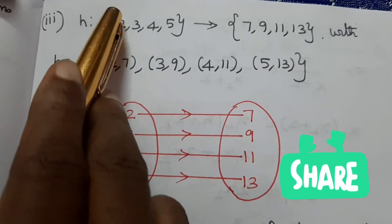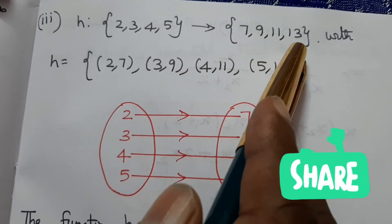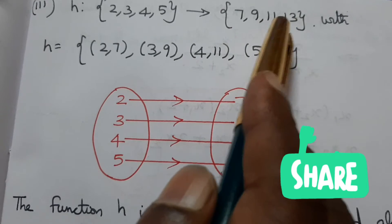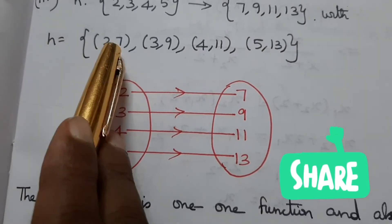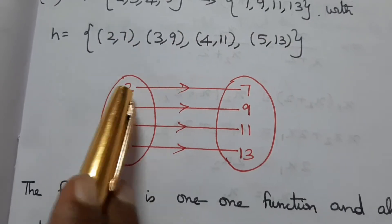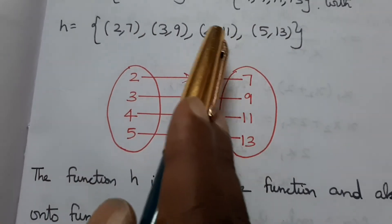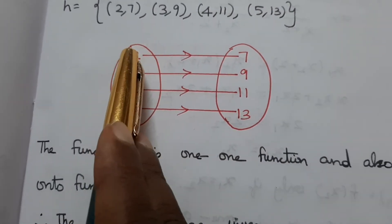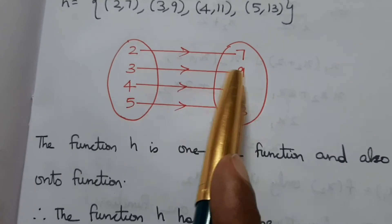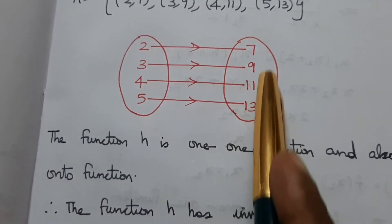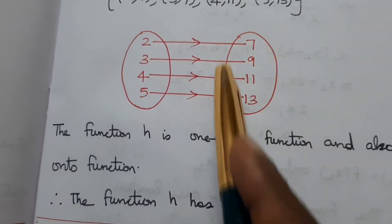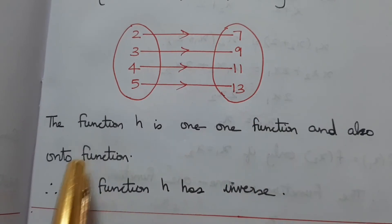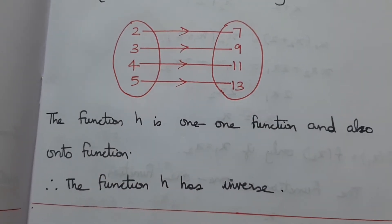For function H: the domain is 2, 3, 4, 5 and the codomain is 7, 9, 11, 13. The mapping is 2 to 7, 3 to 9, 4 to 11, 5 to 13. Each element maps to a unique value, so the range equals the codomain. The function is one-to-one and onto. Therefore function H has an inverse.